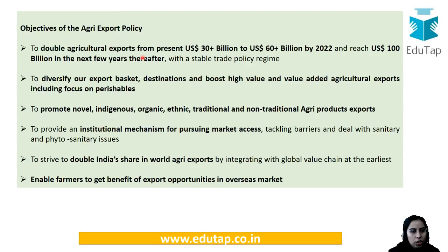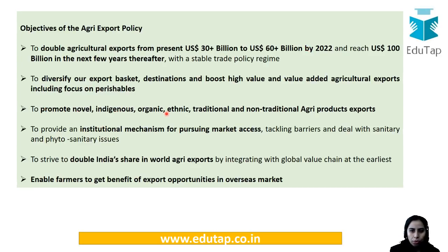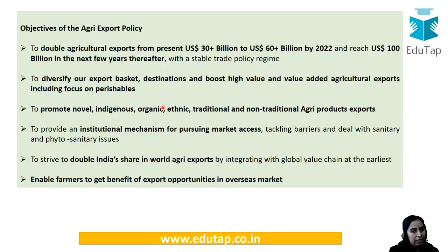So, the goal is to double agriculture exports — presently we have 30-plus billion and we want it to double. We also want to diversify our exports basket and the destinations as well. The promotion of novel, indigenous, organic, and non-traditional agri-products is to be included in the exports. Also, India wants to double its share in the world's agri-exports. Which state has been declared the fully organic state of India? Please mention it below in the comments.